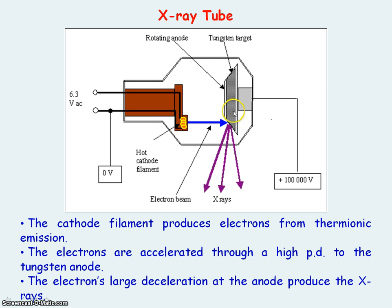Because a lot of heat is produced, the tungsten anode is rotated so that the area the electrons collide with constantly changes, thus allowing time for that area to cool down by radiating heat to its surroundings.